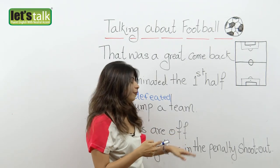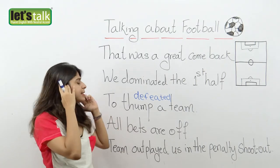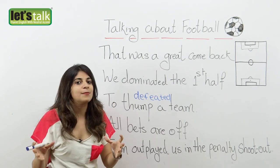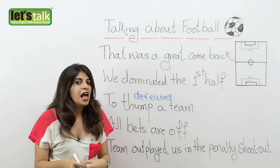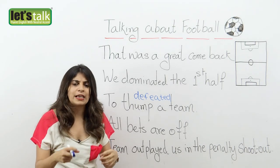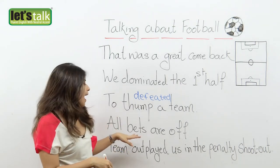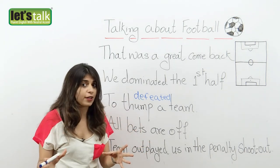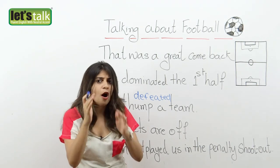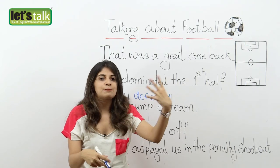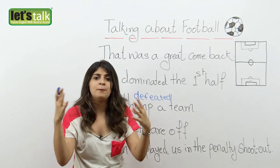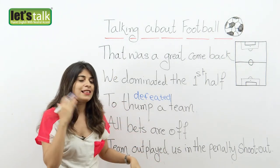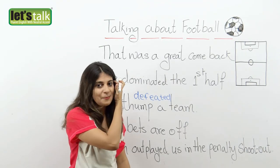Then we have 'all bets are off.' When you say all bets are off on this match, it means both teams are extremely great — they both score great goals, the players are excellent, and you really can't predict who is going to win the match. It's very difficult. So you might say all bets are off for this match — for example, if Germany and Brazil are playing and both teams are just too good, it's quite unpredictable who is going to win.